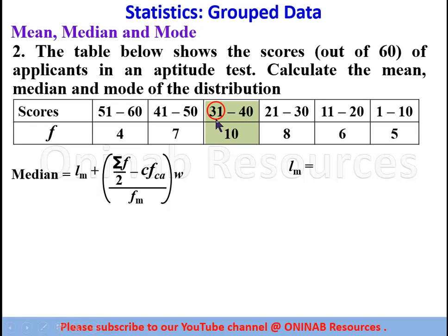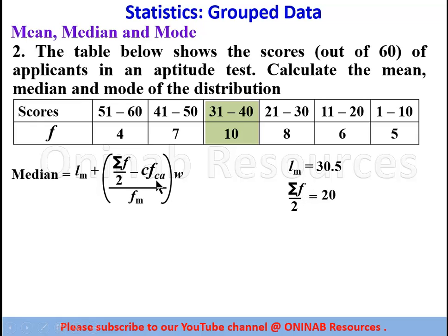The lower class boundary of the median class is found by taking the lower limit of the interval and the upper limit of the class after it: 31 plus 30 divided by 2 gives 30.5. Summation of f over 2 is 40 divided by 2 = 20. The cumulative frequency of the class before the median class (adding from the bottom): 5 plus 6 is 11, 11 plus 8 gives 19, so cfca = 19.